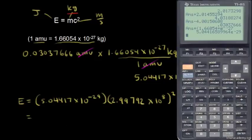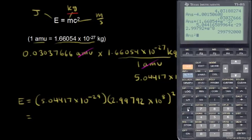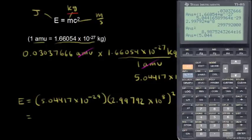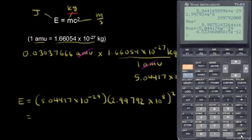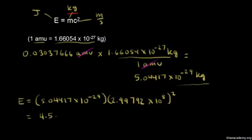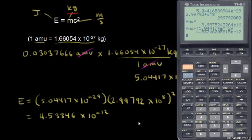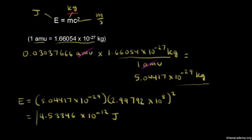Let's do our last calculation. Starting with the speed of light: 2.99792 times 10 to the 8th, squared, then multiplied by our mass of 5.04417 times 10 to the negative 29. This gives us 4.53346 times 10 to the negative 12 joules. That's how much energy is given off.